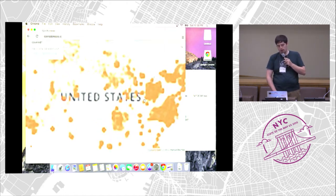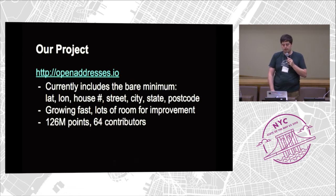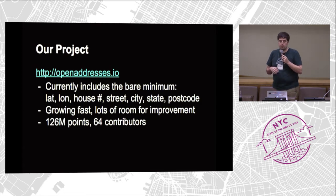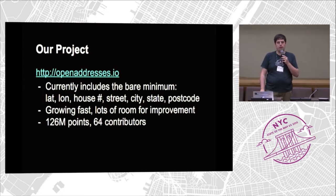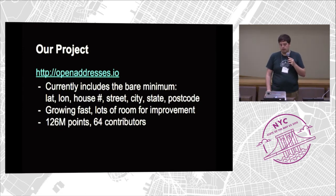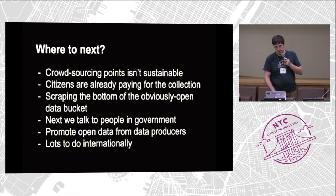All of this data was already out in the wild — we just took the time to go find it and put it on a map. The other interesting thing is that all it has is the latitude, longitude, and address information as a CSV file. There's no complicated JSON or XML to parse, no crazy encoding problems. It's just a CSV file that you can process with command line tools, or load into Esri or QGIS or whatever. It is 126 million rows of CSV, but it's there.